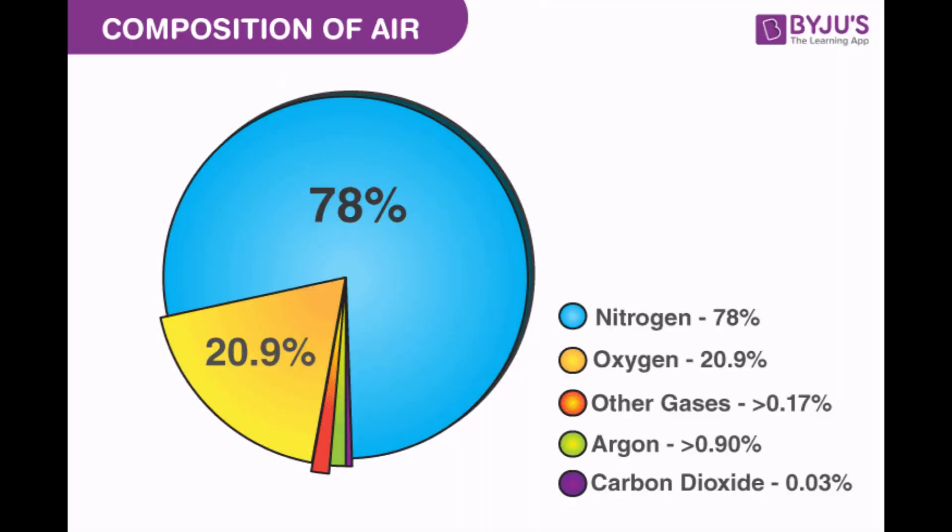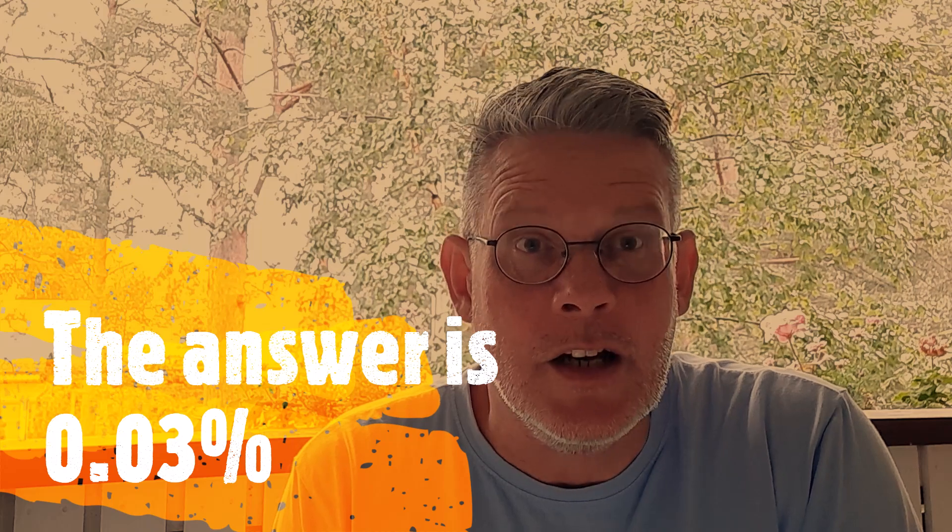You can have a guess yourself now — pause the video and then restart it once you've got an idea. It's 0.03 of one percent, which is quite low. So when global climate change people talk about CO2 levels rising by 20 percent or something, that wouldn't even get to a tenth of one percent. It's absolutely insane.